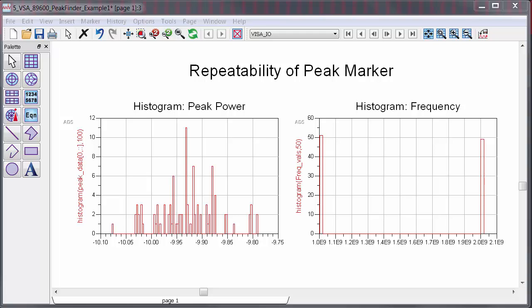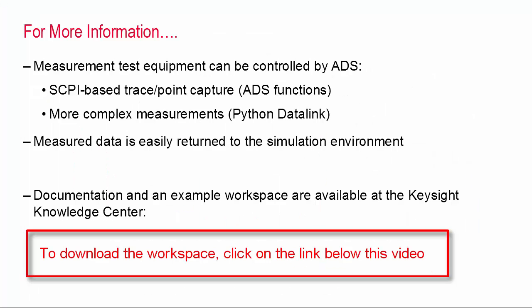To summarize, I made a few small adjustments to a Python script, and now I'm controlling a measurement completely out of ADS while getting back just the data that I need. And that's the power of the ADS Python data link. Today I've illustrated how to control measurement test equipment from ADS using the data link to do either trace capture or more complex customized measurement, and return back data to your simulation environment. For more information about instrument control from ADS, as well as an example workspace that you can download, visit this link on the Keysight Knowledge Center. It's all free if you're a licensed ADS user. Thanks for watching!